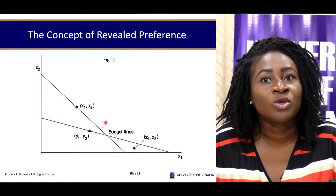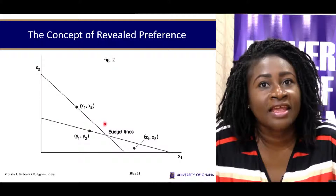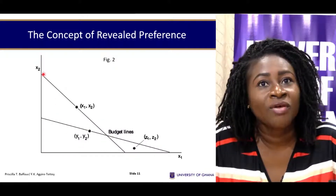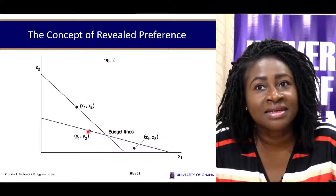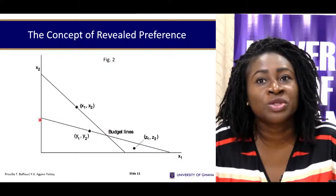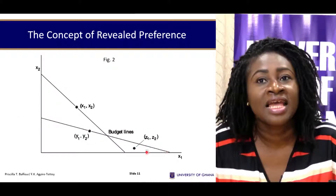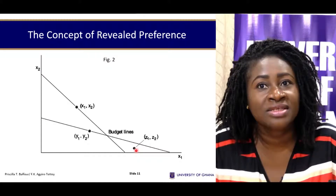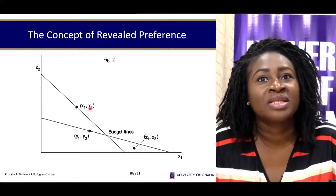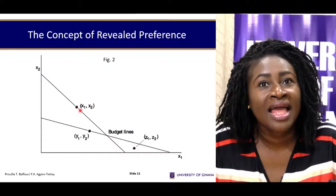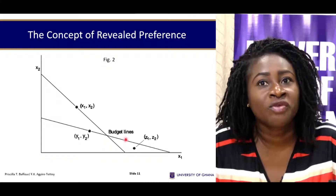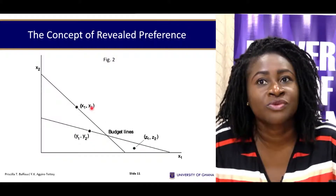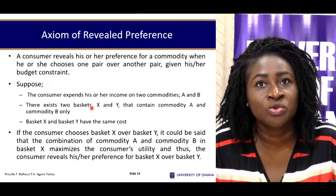This is what we're indicating in the diagram. We have the original budget line and another budget line based on the prices of the commodities. You can see that (Z1, Z2) lies here, and since the consumer has revealed a preference for (X1, X2) over (Y1, Y2), they would obviously also prefer (X1, X2) over (Z1, Z2).